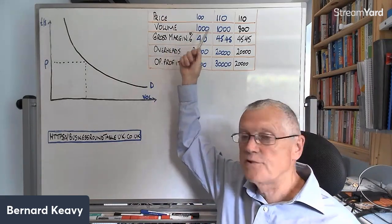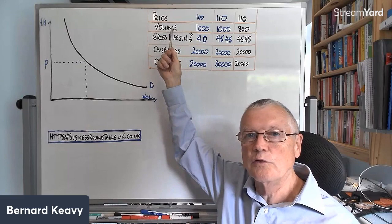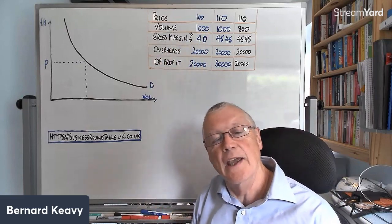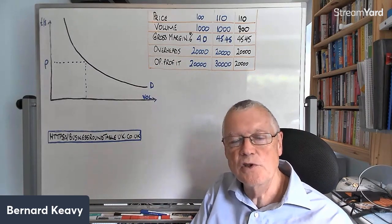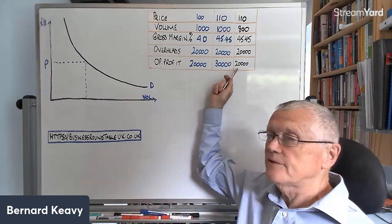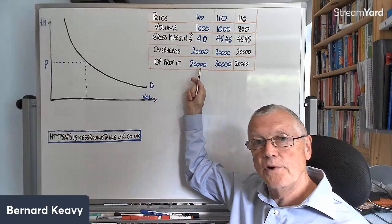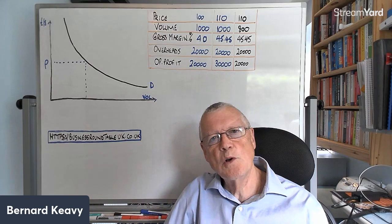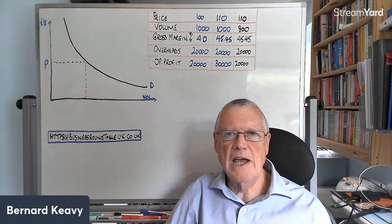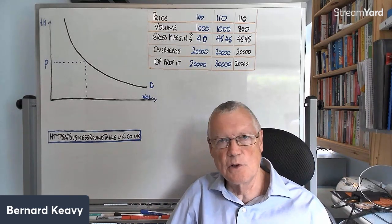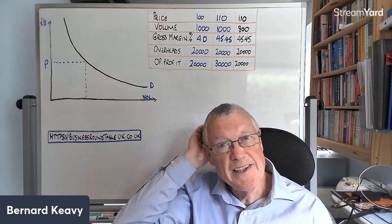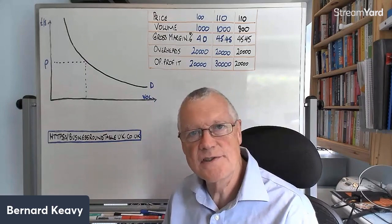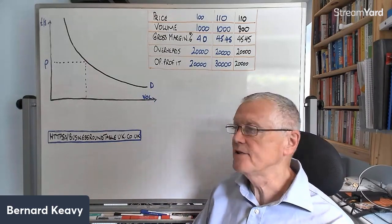The way it actually works out is if you calculate the numbers, you could afford to see your number of transactions, your volume if you like, fall from 1,000 to 800. You could afford to see a 20% drop in your volume and still make the same profit as you did previously. And in fact you'd be better off because although you're making the same profit, you're selling smaller volume, which means you've got less hassle, less storage issues, and probably less time. So actually, even though your profit hasn't changed, you're still better off in a lot of other ways.